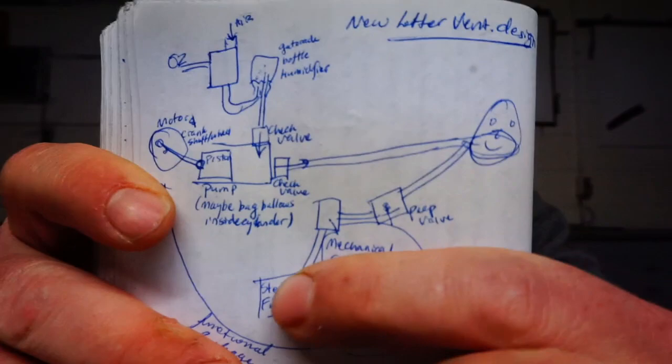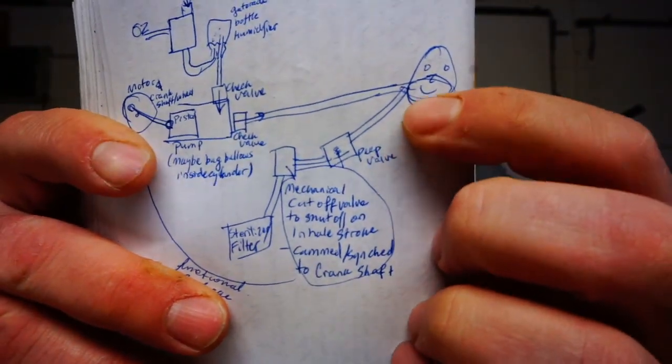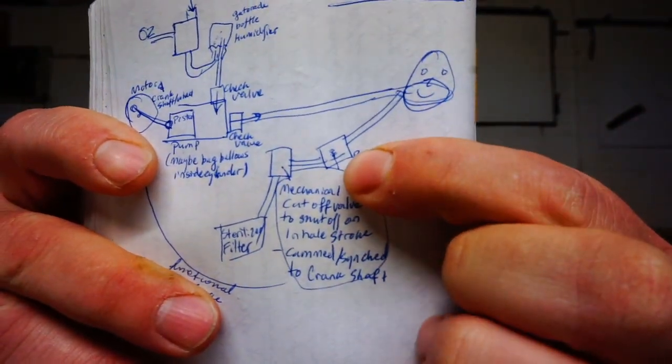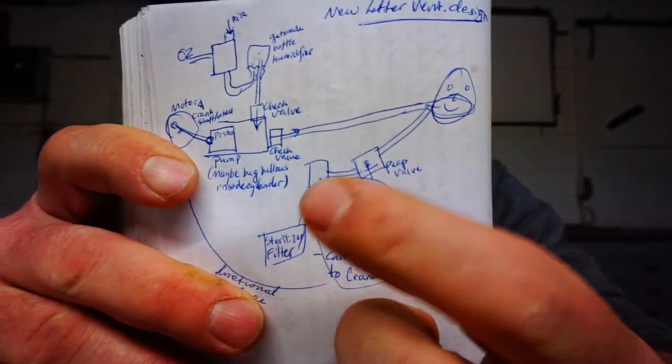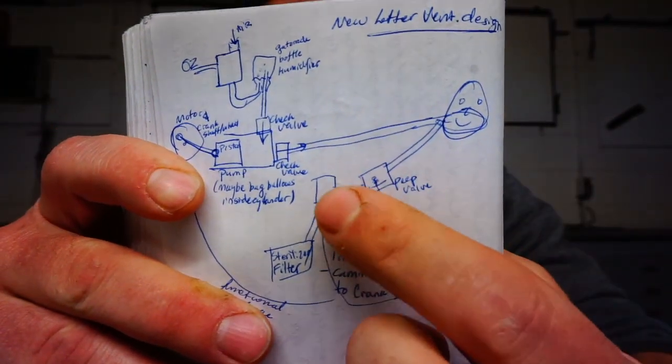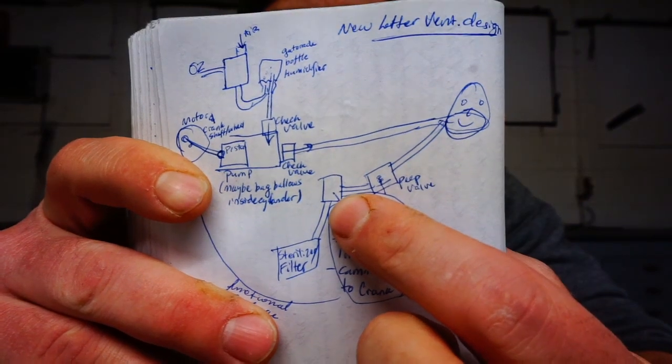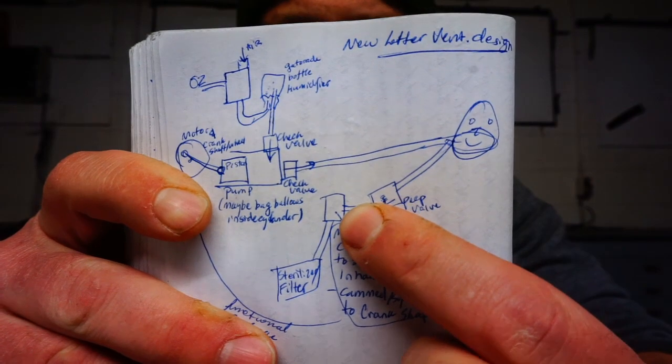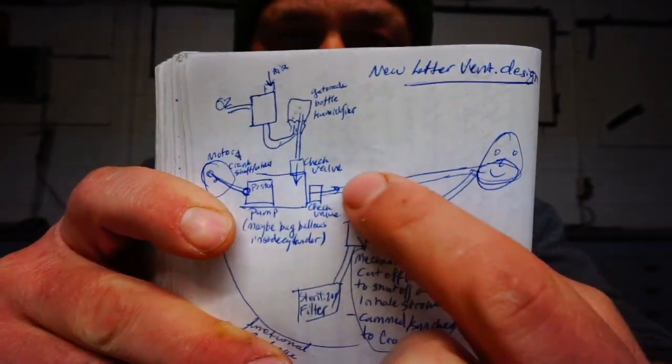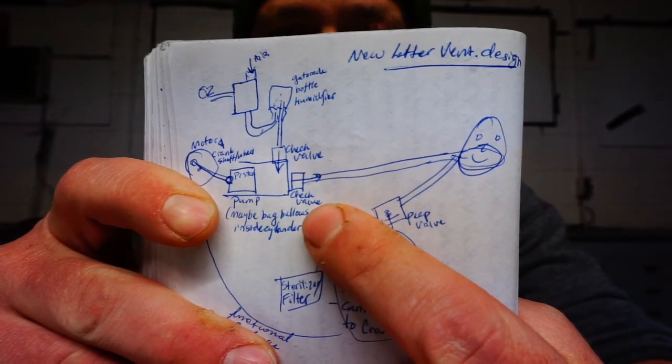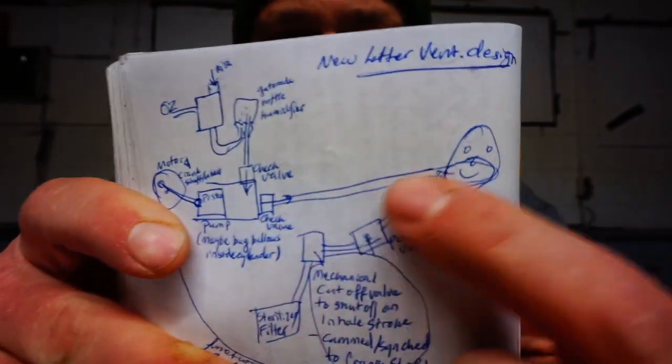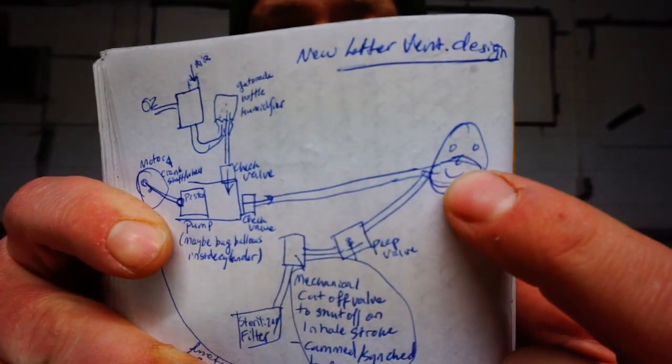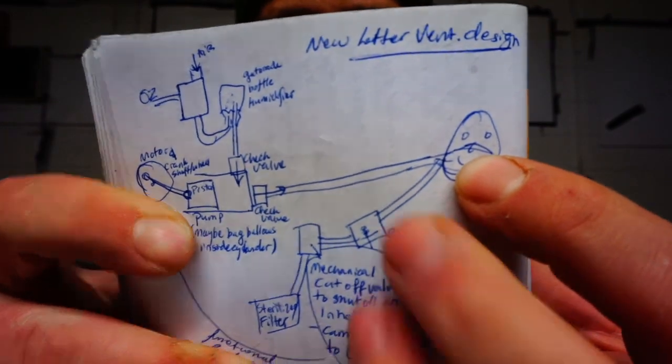Then you have this PEEP valve, which is this guy that I designed, which is a valve that will exhaust up to a certain pressure, and then at a certain low pressure it will cut off. And then after that you have a manually activated valve that will cut off this entire circuit during the inhale phase. So while this piston is pushing air into the patient, this valve closes, blocking the PEEP exhaust, forcing air into this patient.